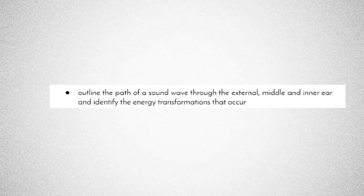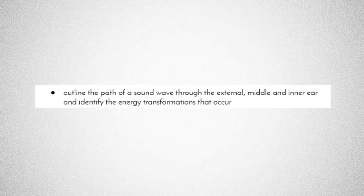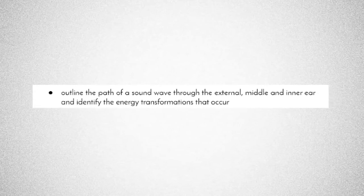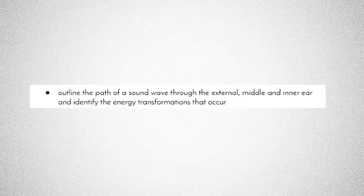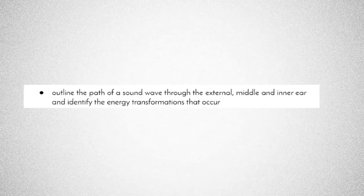Now that we've looked at the different parts of the ear, and we'll be looking at them in a little bit more detail when we do the secondary source investigation, we need to outline the path of a sound wave as it moves through the external, middle, and inner ear